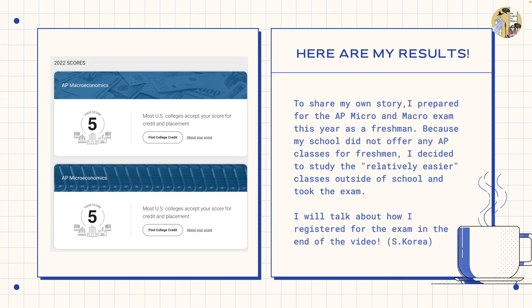As you can see on the left, these are my scores for the 2022 exams. I prepared for the exams this year as a freshman, and my school unfortunately didn't offer any AP classes for freshmen. So I decided to study the relatively easier classes outside of school and take the exam. The relatively easier subjects include AP Psych, AP Macro, AP Micro, and AP Human Geography. I'd recommend starting with those as a freshman — it was a great experience to understand how the AP exam works and lessen the confusion going into sophomore year.